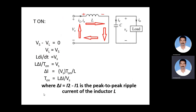We know the formula for voltage across the inductor is L·(di/dt). So L·(di/dt) = Vs. Assuming the Ton time, the change in current during Ton gives L·(ΔI/Ton) = Vs. Therefore, ΔI = Vs·Ton/L, and Ton = L·ΔI/Vs. The change in current ΔI = I2 − I1, which is the peak-to-peak ripple current of the inductor.